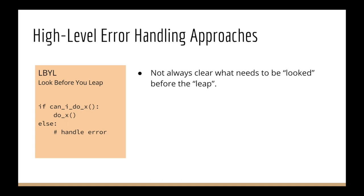If you don't know how that thing works internally, what would you check for? Say you want to create a file. The logical thing is to check the file doesn't exist already. But do you need to check write permissions on the directory? Do you need to check if the disk is full? It can get really out of control. You can't possibly know all the things to check. And in Python, most library functions raise exceptions anyway, so you're going to get them even if you try to avoid them.